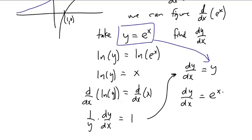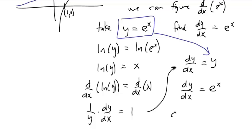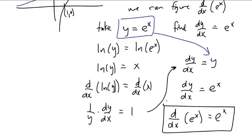That is to say, if y is e to the x, the derivative is e to the x. Or, as concisely as I can muster, the derivative with respect to x of e to the x is e to the x. Just what we wanted it to be. And I think that's it for now.